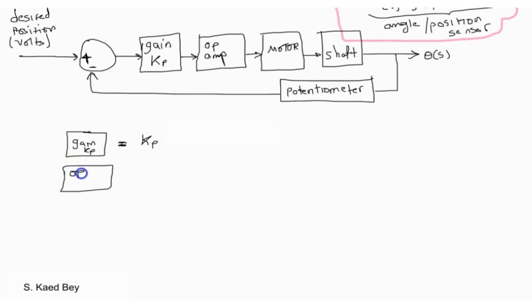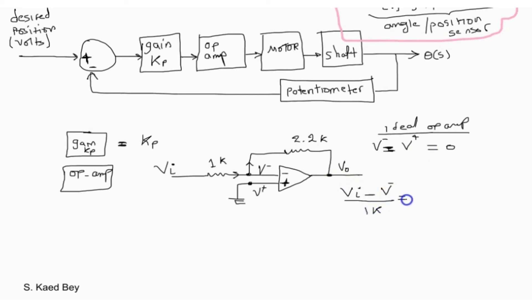The next block is the operational amplifier, the LM675 used in this case. If we assume that the operational amplifier is ideal, then the voltages at the input nodes of the op amps are equal. Equating the current in the upper branch, this will lead to the gain of the op amp. The gain in this case is negative 2.2.